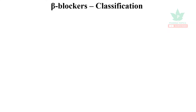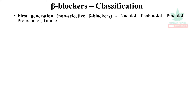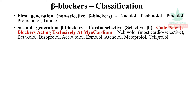Welcome to our pharma topics channel. Our topic of discussion is beta blockers. Let us classify the beta blockers. First generation beta blockers block beta-1 receptors present in the heart and beta-2 receptors present in the lungs. They include nadolol, penbutolol, pindolol, propranolol, and timolol.